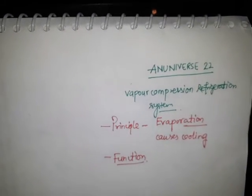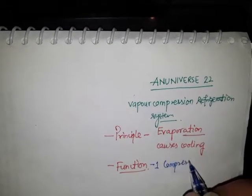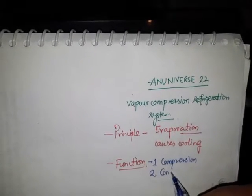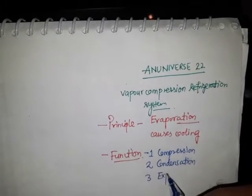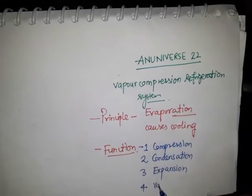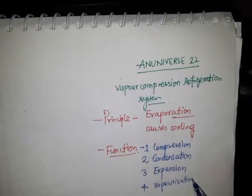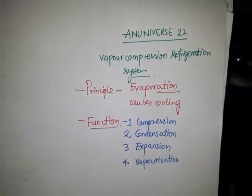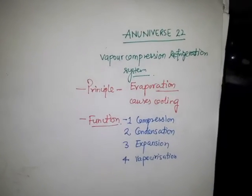Now the functions of the vapor compression system — there are basically four fundamental functions. The first one is compression, the second is condensation, the third is expansion, and the fourth is vaporization. These are the main fundamental functions of the vapor refrigeration system.